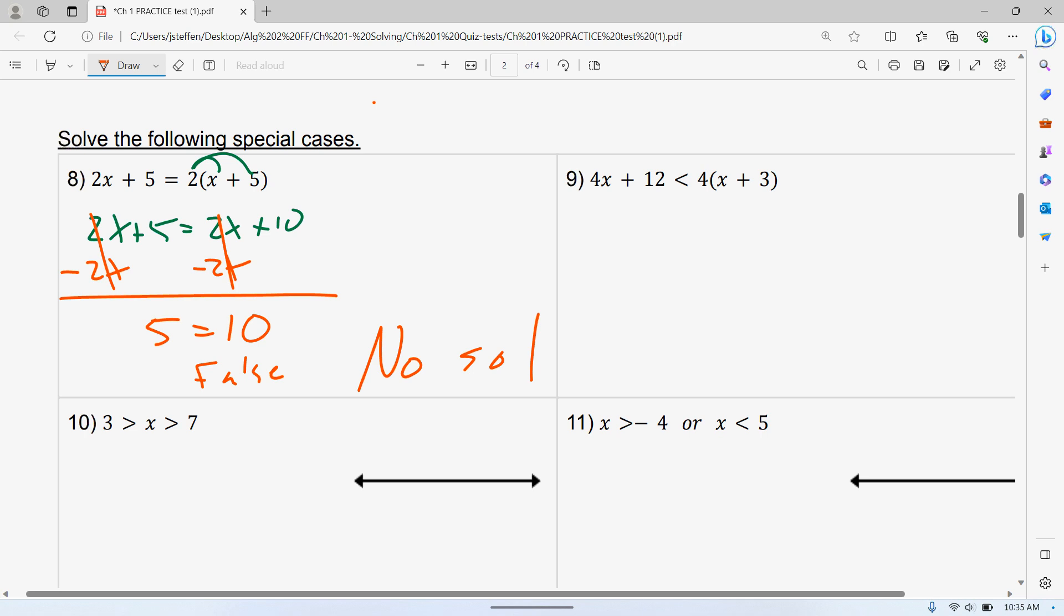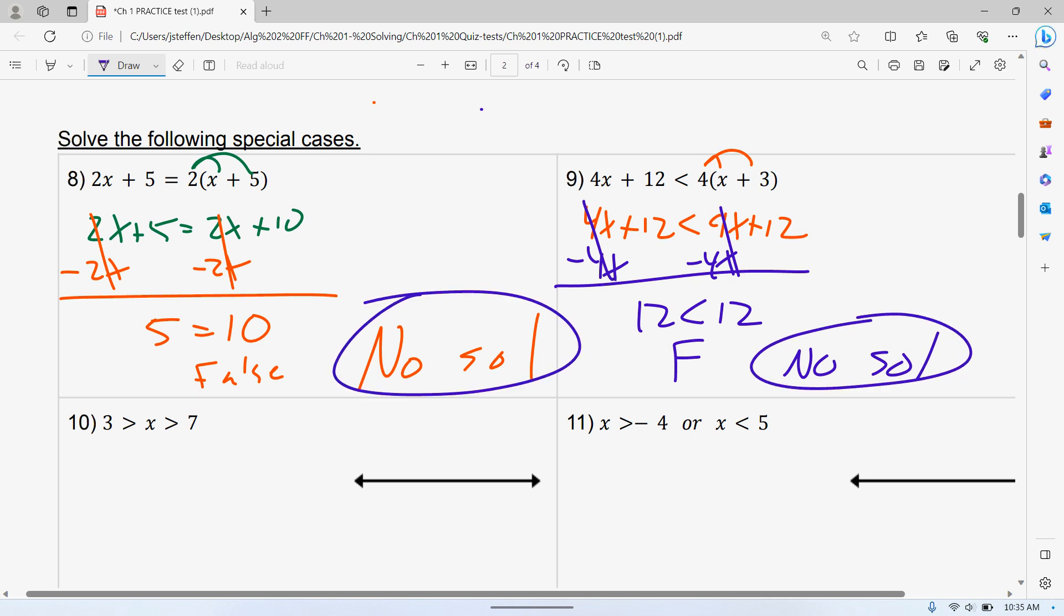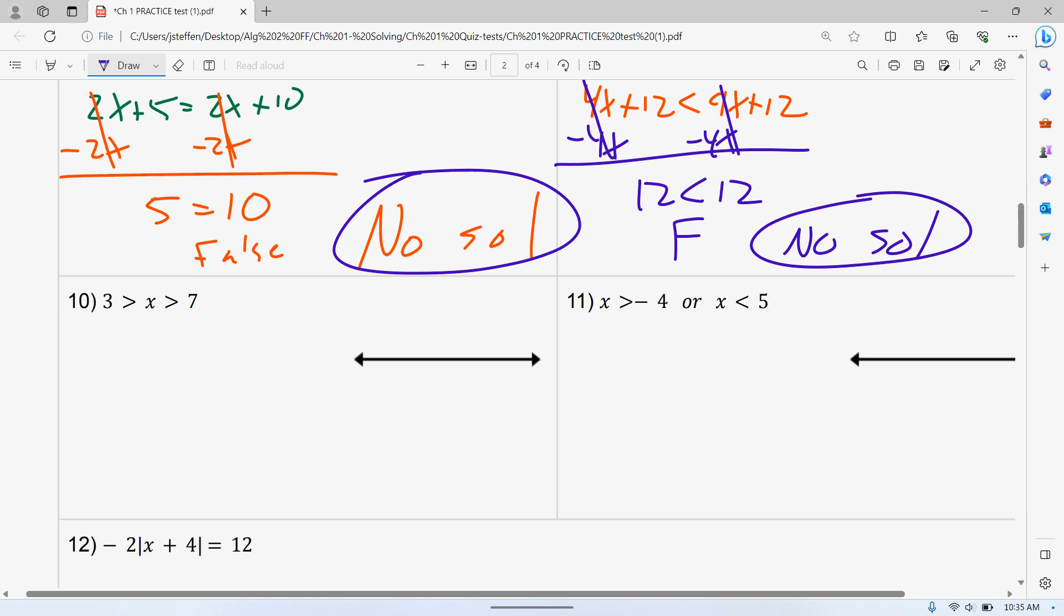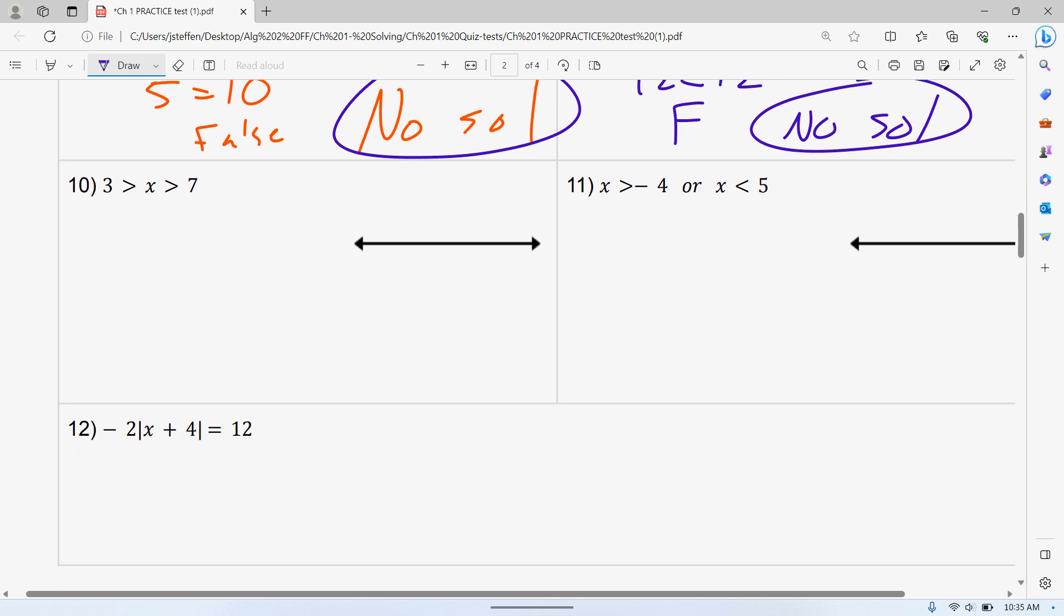Special cases. These are cases where you distribute, and we have 2x plus 5 is equal to 2x plus 10. Subtract your 2x. This is the red flag, so we don't have any variables left. 5 is equal to 10. That is not true. That's false. The next one's an inequality. If I subtract 4x from both sides, we have 12 is less than 12. This one's also false, no solution. 12 is not less than 12. 12 is equal to 12, but they don't have that line. If they had that line underneath, that would be true, but they don't have that line.